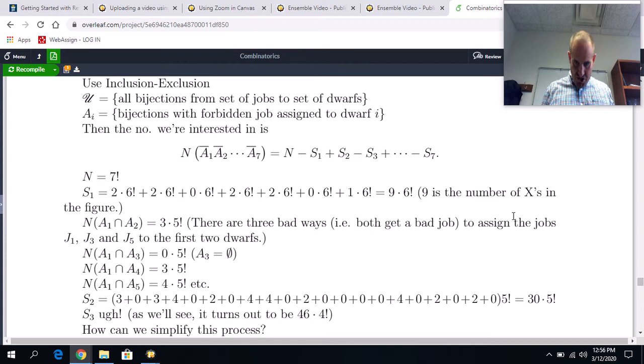And once we've chosen one of those bad jobs for dwarf one in two ways, there are six factorial ways to assign the jobs to the other dwarves. And similarly, that second sum in S_1 is obtained in a similar way, et cetera, et cetera. And what we realized was in the end, six factorial factors out. And you end up getting nine times six factorial. And we said, huh, well, nine is just the number of X's in that diagram above, which makes sense.